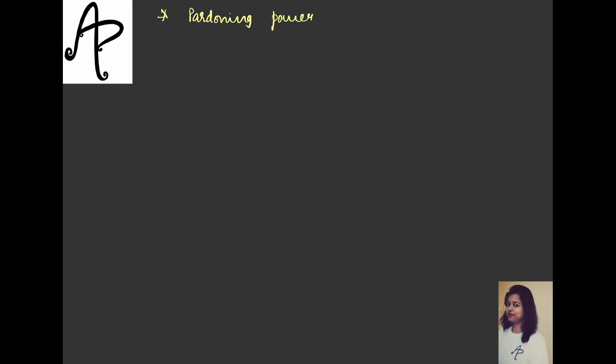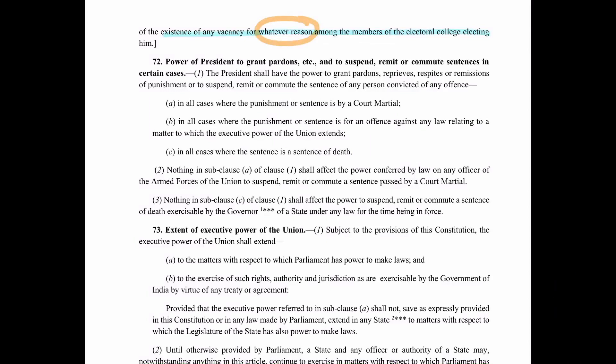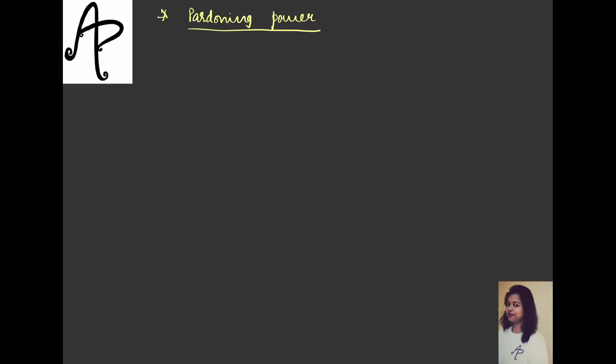The word 'pardoning power' — the term pardon has already a separate meaning which we'll just see, but this entire grouping of telling that it is a power covers multiple aspects, multiple things within it. These are the words that you will read in the Constitution. If I show you the article for President, you will see terms like pardons, reprieve, respite, remissions, suspension, and commutation.